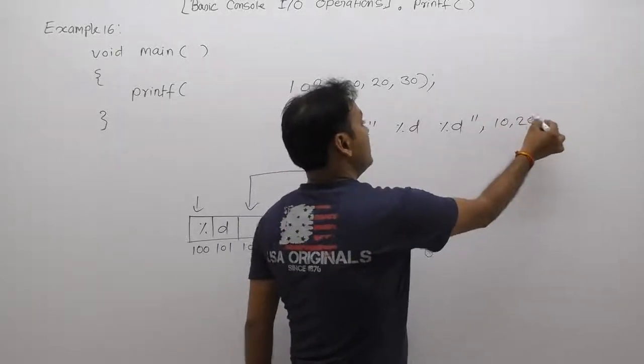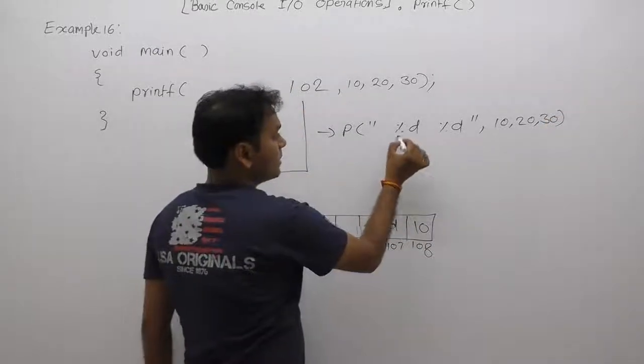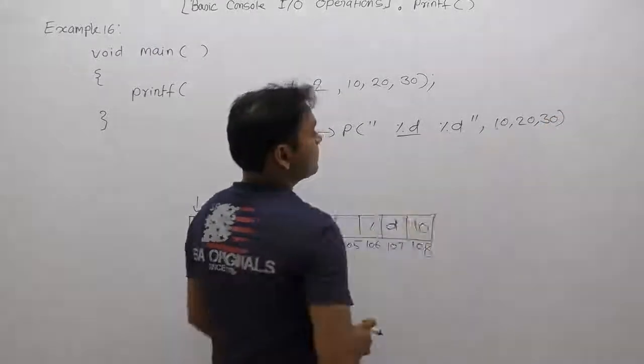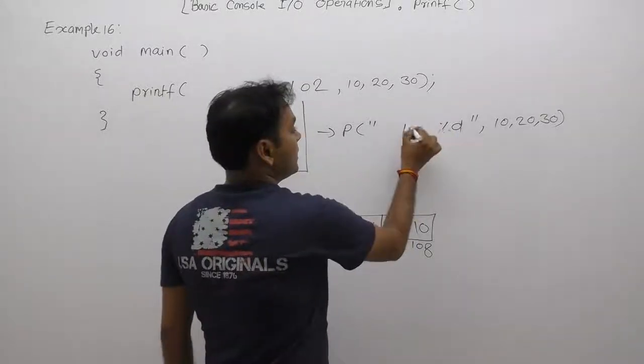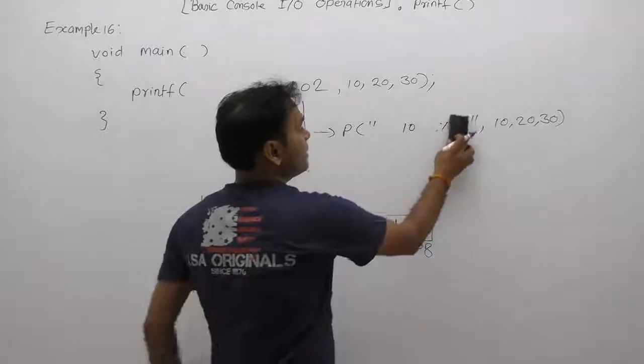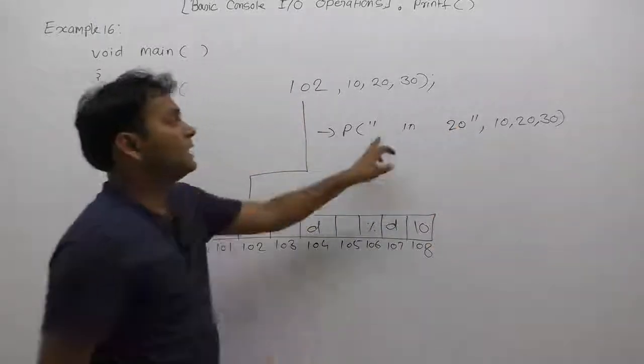The arguments are 10, 20, and 30. The first percent d will be replaced by the first argument, which is 10. The next percent d will be replaced by the next argument, which is 20.